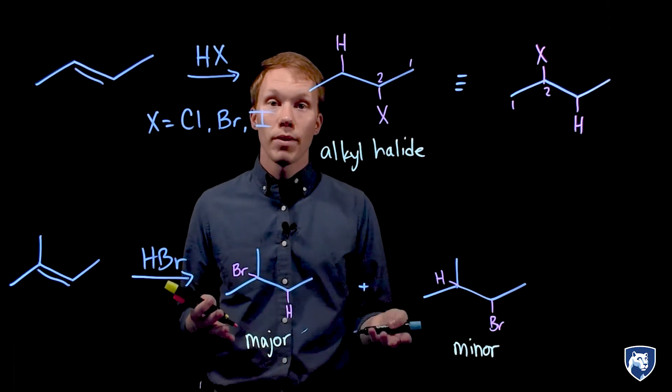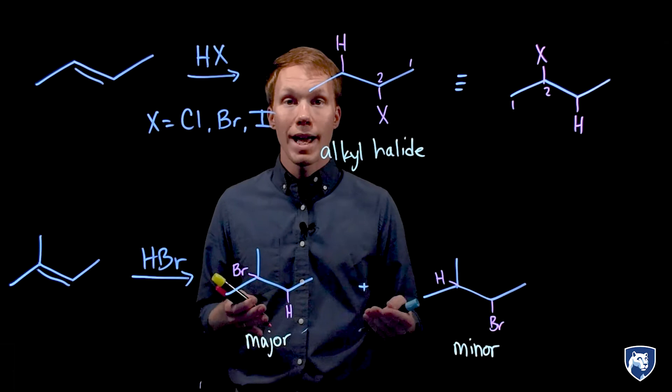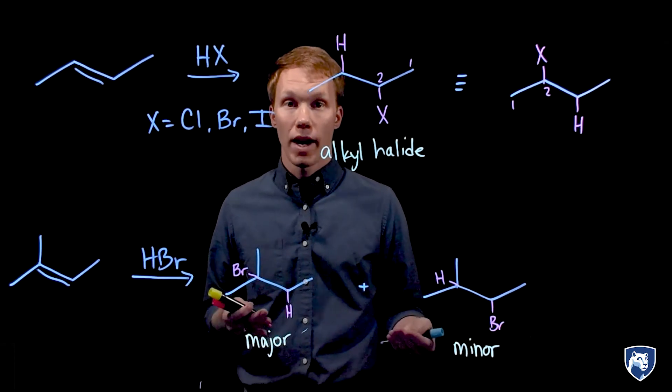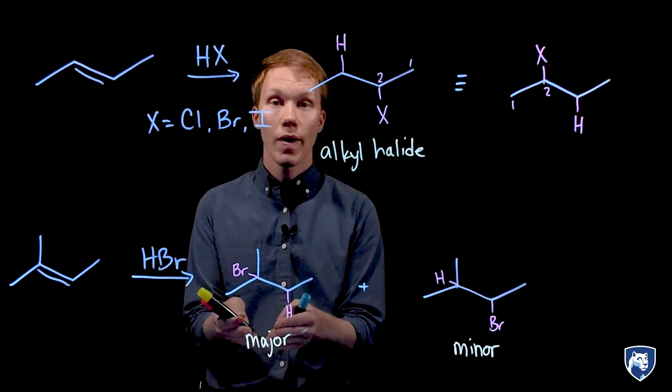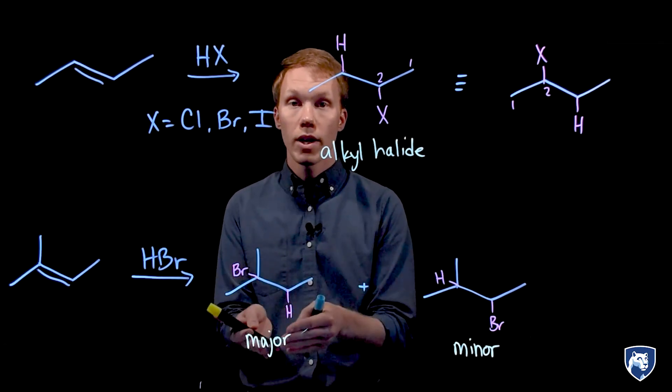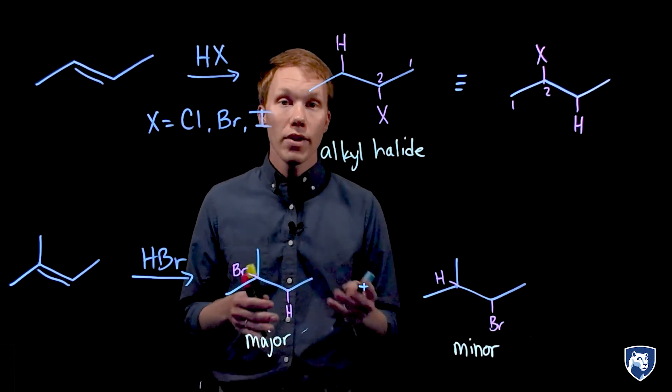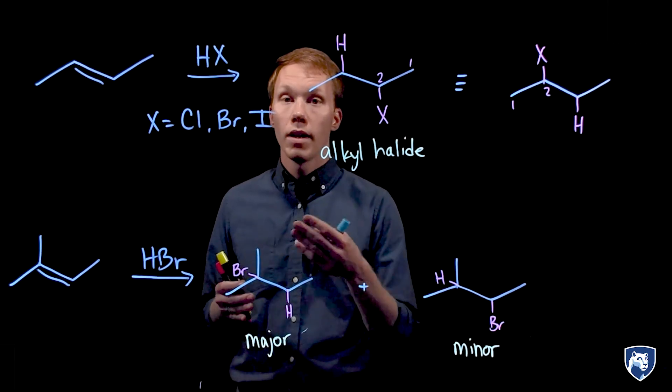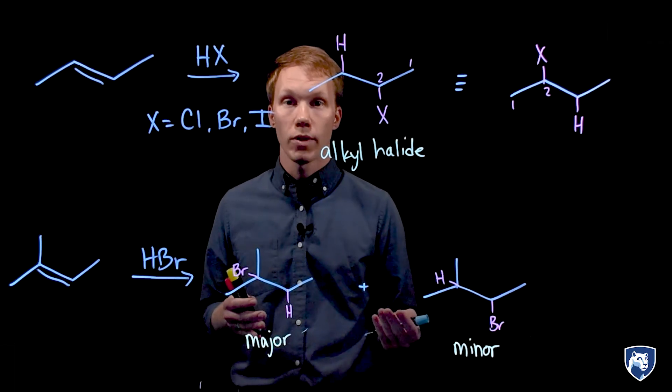This reaction then is labeled as regioselective. A reaction is regioselective when one constitutional isomer is produced in excess of others. In this case, we have the tertiary alkyl halide produced in greater amounts than the secondary alkyl halide. Another name for our constitutional isomer is a regioisomer, where we'd have a functional group or substituent that is in a different region of the molecule, a different position.